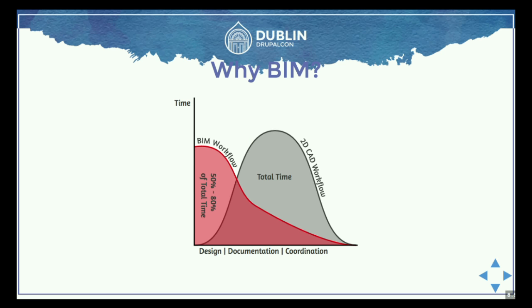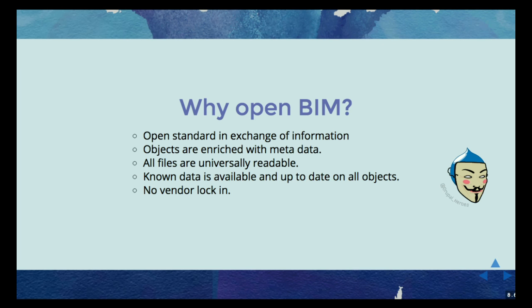If you compare a traditional 2D CAD drawing building process with a BIM workflow, you see that, just like Agile, you're more able to adapt to changing circumstances and do changes and improvements without increasing the budget. Some smart people together made an open standard for building information models, defined by the IFC — Industry Foundation Class. And that way you just have a huge text file that contains all the information about the building: the geometry as well as the information model.